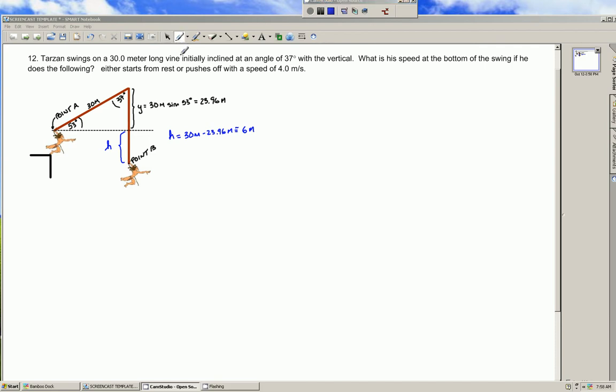Good morning. A number of you have asked me to solve this question, question 12, from problem set number 6, which involves Tarzan swinging on a 30 meter long vine, depicted in this sketch that I've prepared here. And I did this in advance to save a little bit on screencast memory.